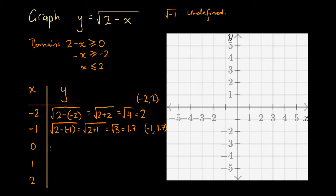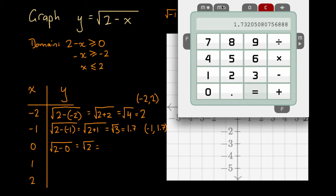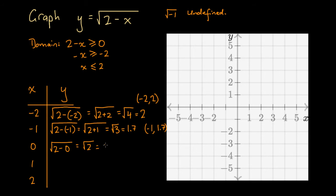For x = 0, we have y = √(2 minus 0), which is just √2. Using the calculator — press 2 and then the square root button — we get 1.41... Rounding to one decimal place, that's 1.4. So the point is (0, 1.4).